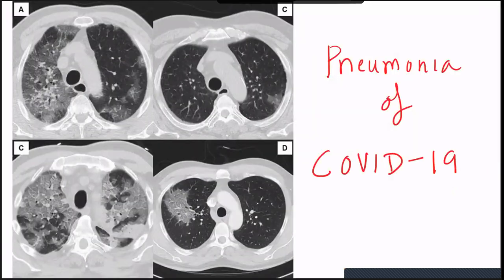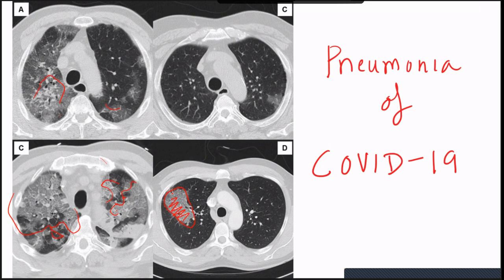COVID-19 pneumonia: you can see on CT how fibrotic changes occur, described as organizing pneumonia. On CT obtained around 10–14 days, you can see patchy areas of consolidation and perilobular distribution with reticular opacities — organizing pneumonia pattern. These patients are very ill and can die from this organizing pneumonia.